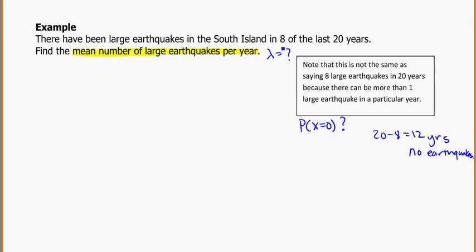So again, because I know that in 8 of the last 20 years, there have been earthquakes, that in 12 of those years, in the last 20, there have been no earthquakes. So that tells me my probability of earthquake not happening is 12 out of 20, which is equal to 0.6. So 12 out of the 20 years, there were no earthquakes. I know my probability of it not happening.